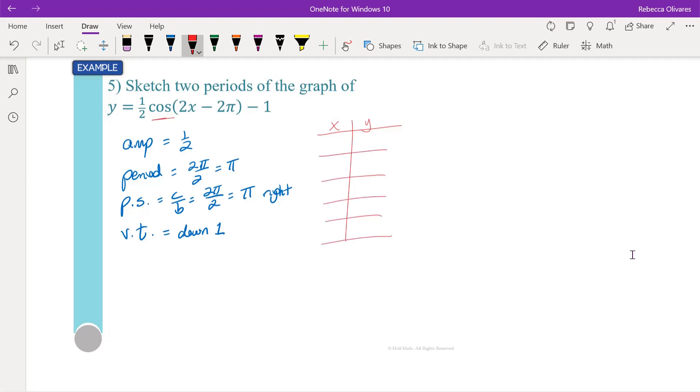The cosine function, when we look at the mother function, it always starts high, and then it goes to the middle, and then it goes low, and then it goes back to the middle, and then it ends high. We're just looking at one cycle of this particular cosine function.